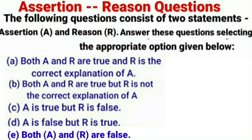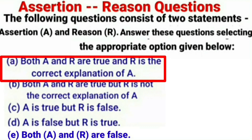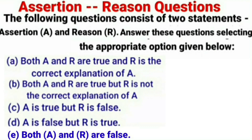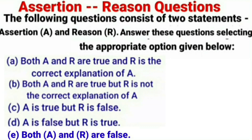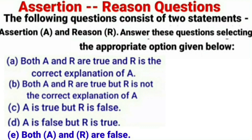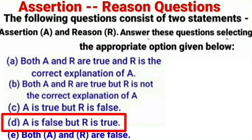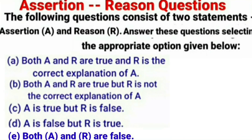The first tip is to find out whether both statements are true or false. If assertion and reason are both true, and the reason is the exact explanation of assertion, then option A is the correct answer. If the reason is not the exact explanation of the assertion, then option B is correct. If assertion is true and reason is false, C is correct. If assertion is false and reason is true, option D is correct. If both statements are false, then E is the correct option.